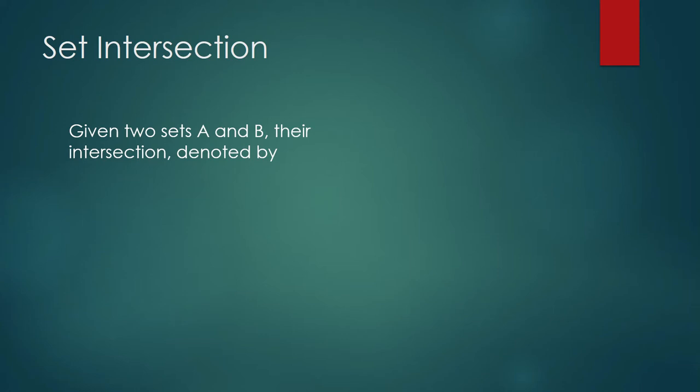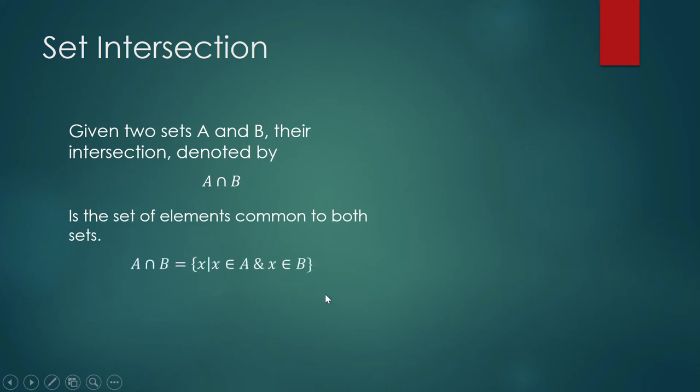Given two sets A and B, their intersection, denoted by this symbol A intersection B, is the set of elements that is common to both sets. So this is how you put that in set builder notation. A intersection B is equal to X such that X is an element of A and X is an element of B.